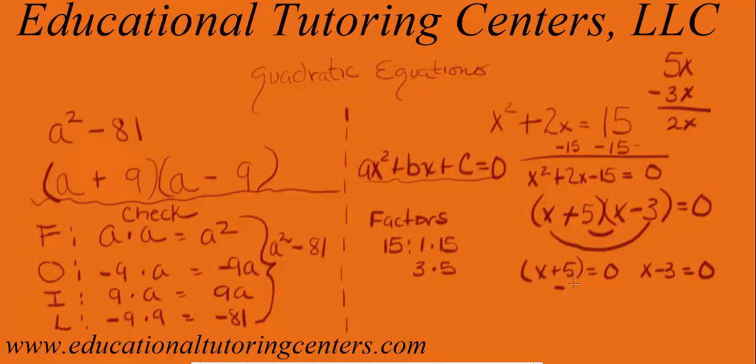So again, in algebra, we do the opposite operation so that we can solve for our variable. So that's gone. And so x is equal to negative 3.